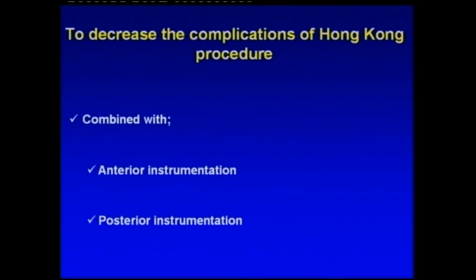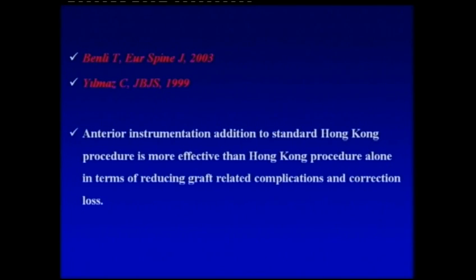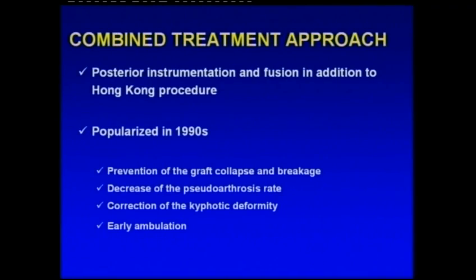To decrease complications in the Hong Kong procedure, it can be combined with anterior or posterior instrumentation. Anterior instrumentation added to the standard Hong Kong procedure is more effective than Hong Kong procedure alone in reducing graft-related complications and correction loss. Posterior instrumentation and fusion in addition to Hong Kong procedure, popularized in 1990, provides prevention of graft collapse and breakage, decreased pseudarthrosis rate, correction of kyphotic deformity, and early ambulation.